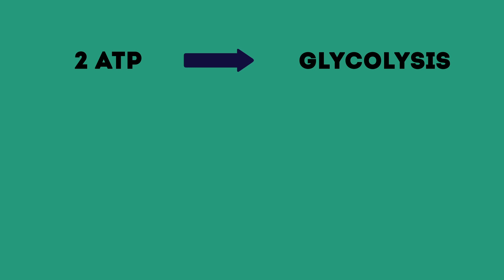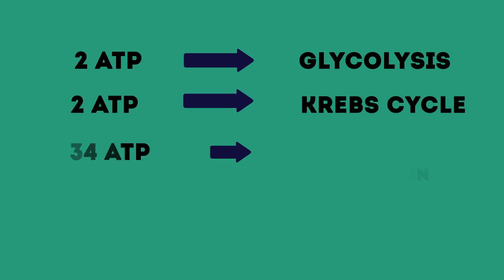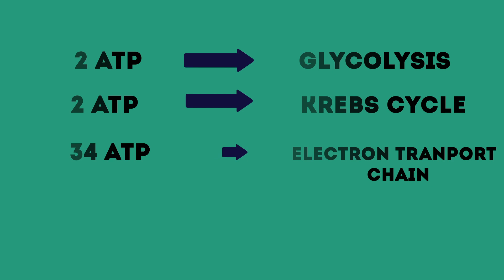Calculation of ATP: 2 ATP from the glycolysis, 2 ATP from the Krebs cycle, 34 ATP from the electron transport chain. It equals 38 ATP.